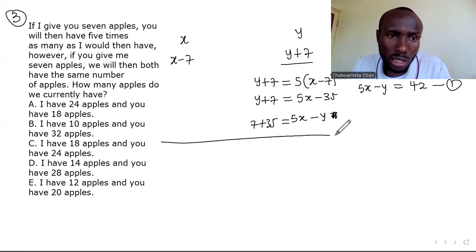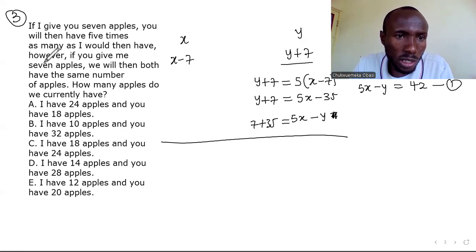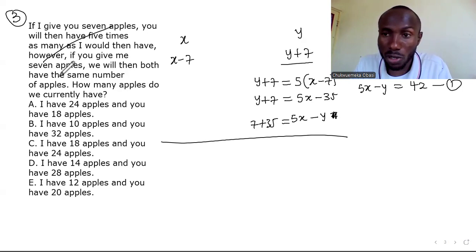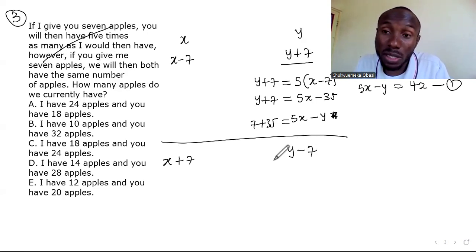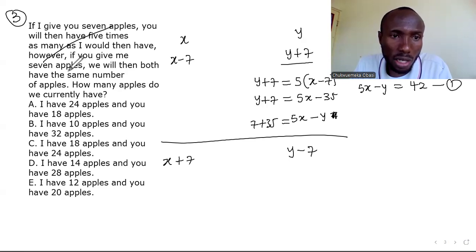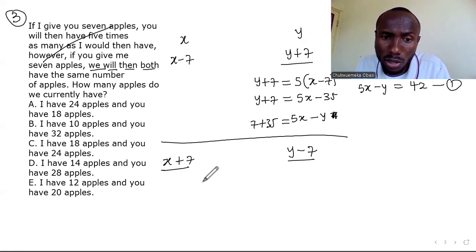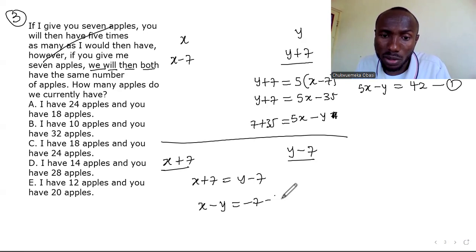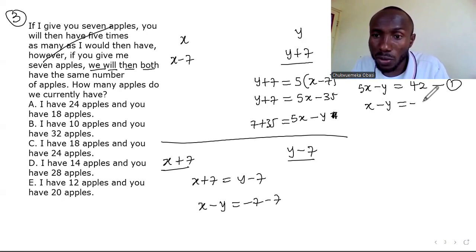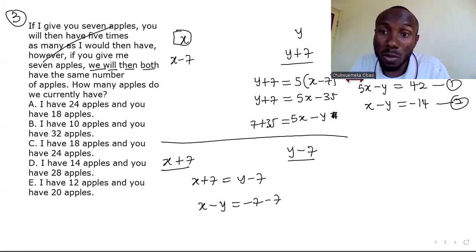For case two: if you give me seven apples, I have x + 7 and you have y − 7. The result is we both have the same number. So x + 7 = y − 7. Rearranging gives x − y = −14. That's equation two.